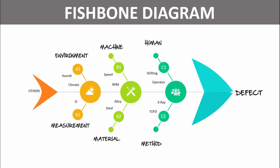In today's tutorial I'm going to show you how to create a fishbone diagram, also popularly called an Ishikawa diagram. You can see here I have created this diagram with the fish head, fish tail, and fish bones with icons. You can add what the problem is here — different types like environment, measurement, material, machine, human, method — and then what the cause is. You can also add more details.